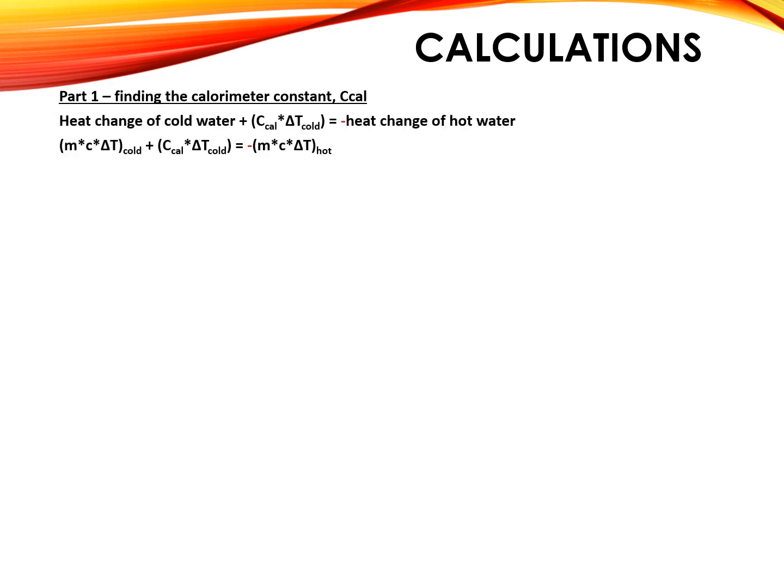Here's a breakdown of the calculations for the lab. In part one, we're finding the calorimeter constant. To do this, we need this equation: the heat change of the cold water plus the calorimeter constant multiplied by the change in temperature of the cold water equals the negative heat change of the hot water. Remember, the heat change is that value Q, which equals MC delta T.